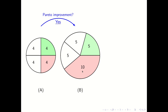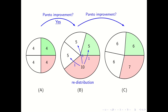We might consider redistribution: the person with 10 is taxed and gives up one unit to each of the other persons. The result is situation C, where three persons have a cake size of 6 and one person has a size of 7. Is moving from B to C a Pareto improvement? Three persons are better off, but one person is worse off. So the Pareto criterion is fulfilled for both B and C — moving from B to C is not a Pareto improvement, and neither is moving from C to B, because at least one person is always worse off.